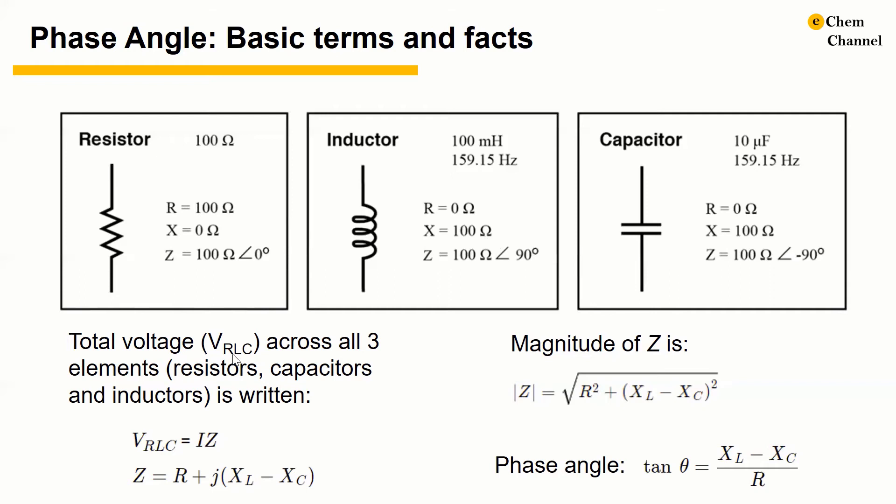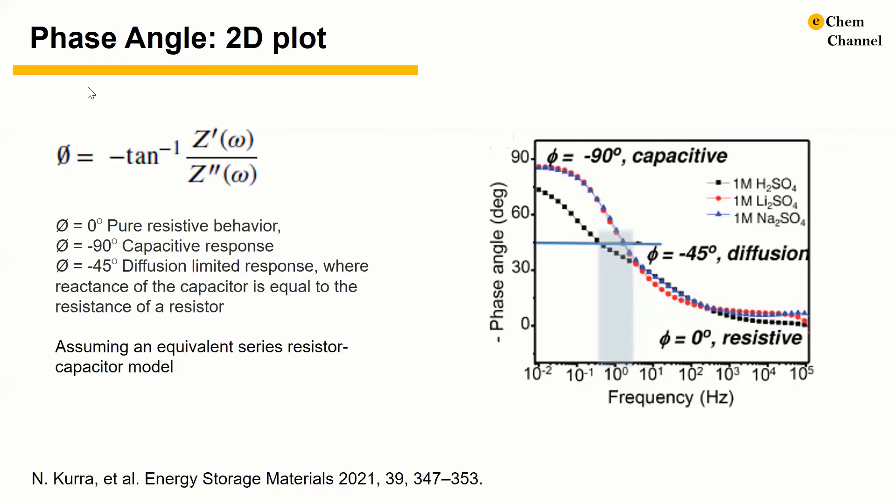To find the total voltage across a circuit with resistor, inductor, and capacitor, we cannot simply add the voltages together because the voltages of resistor and capacitor are considered to be imaginary quantities. So the total voltage across three elements is written as V equals I multiply Z, and Z is written as resistance plus j multiplied by the impedance due to the inductor minus the impedance due to the capacitor. The Z can be expressed by a complex number with the magnitude of Z and the phase angle, and the magnitude of Z and the phase angle can be calculated based on these two equations.